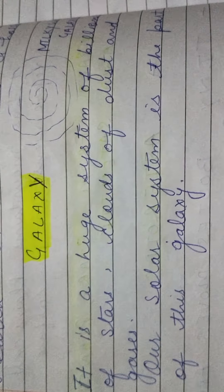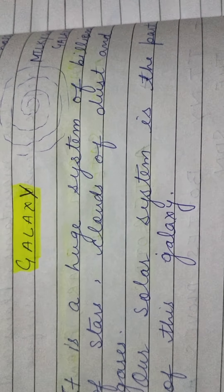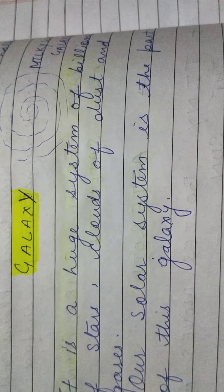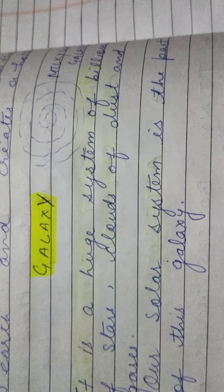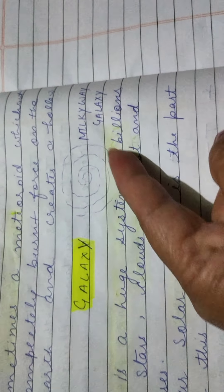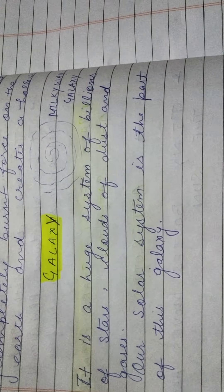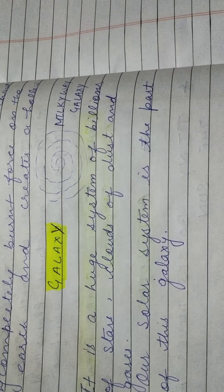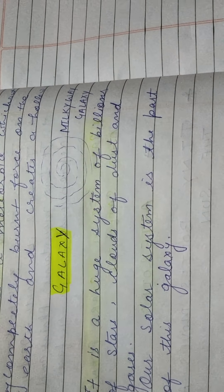Now, let's come to the galaxy students. A galaxy is a system of billions of stars, clouds of dust and gases. Our solar system is also a part of the Milky Way galaxy. You can see in the sky a group of stars — that is the Milky Way, and our solar system is part of this galaxy.